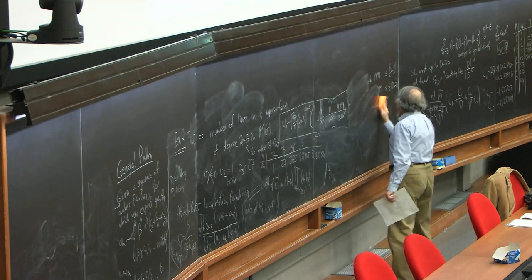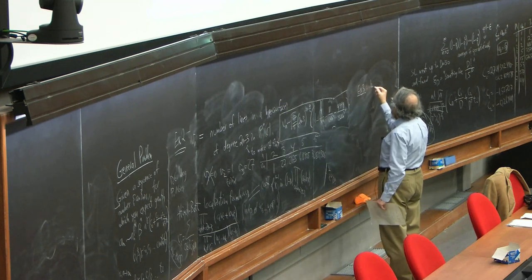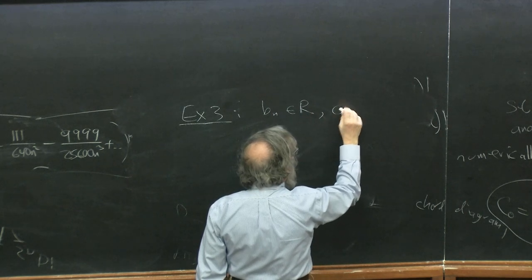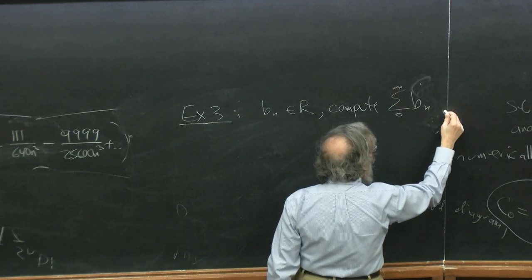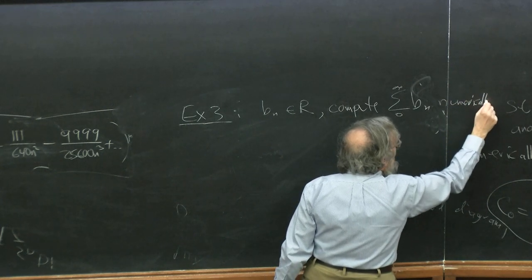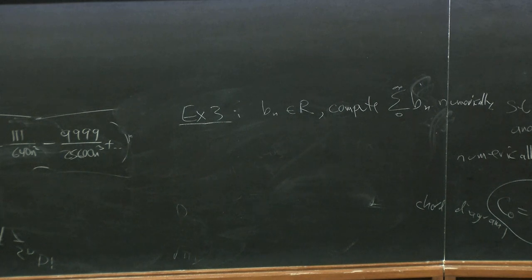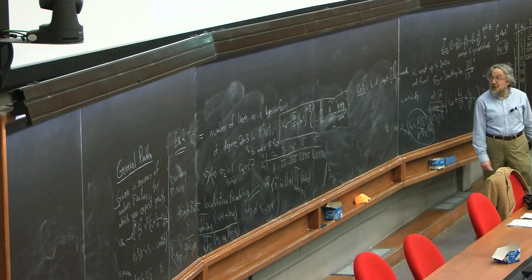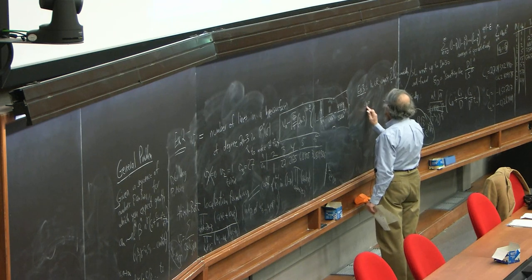The next example is an infinite collection of examples. Example three: let b_n be some numbers in R, known explicitly, decaying in some way, and we want to compute the infinite sum to high precision. This is certainly a problem you have a lot in mathematics. You have an infinite sum and you want to compute its value numerically to high precision, after which, if you're lucky, you might be able to recognize it exactly. It should be fairly slowly converging, or it's no fun. If it converges like 1/n!, you just take 15 or 20 terms and already have 20 digits. But if it converges like 1/n² and you want 100 digits, you'd need 10^100 terms — no computer will do that. So the question is: you take A_N to be the partial sum.